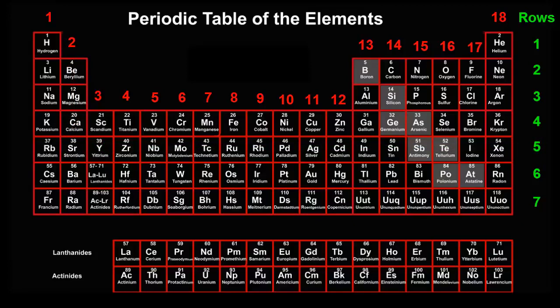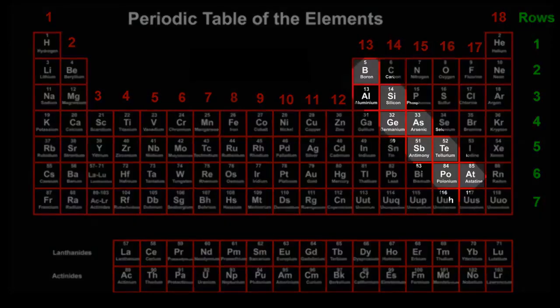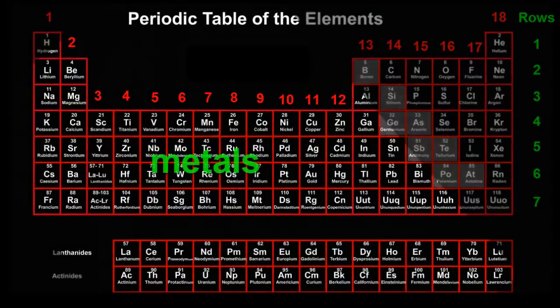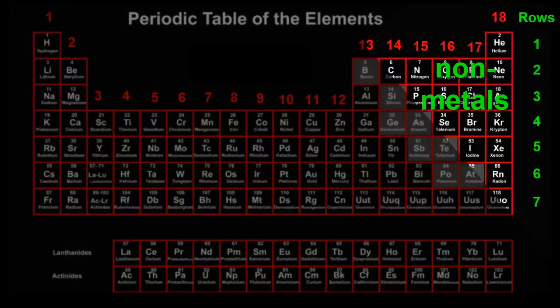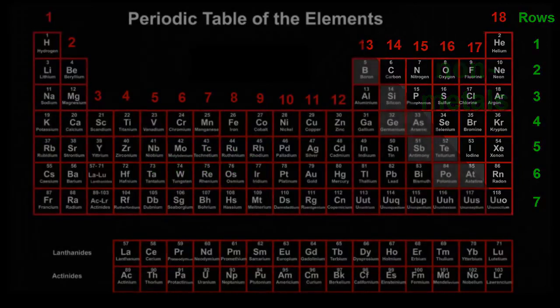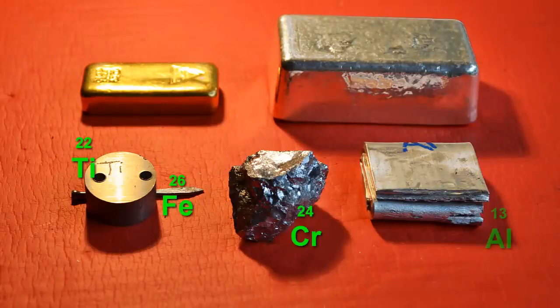Can you see the grey diagonal band that splits the periodic table into two parts? This divides the elements into metals on the left and non-metals on the right. What is a metal? Here's a few. Titanium, iron, chromium, aluminium, silver, and gold, with the atomic numbers above the symbols.